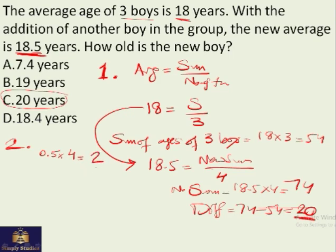It means this new person must be 2 years older than the previous average, which gives you 20. This is a far easier trick.